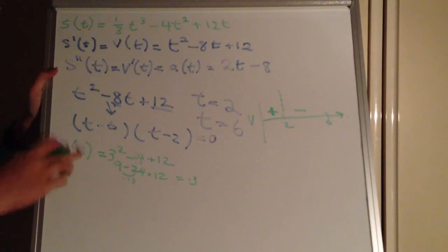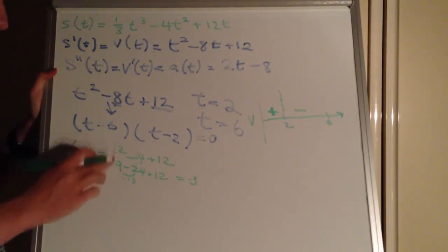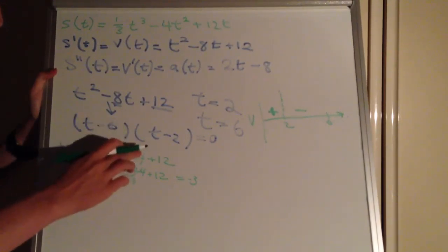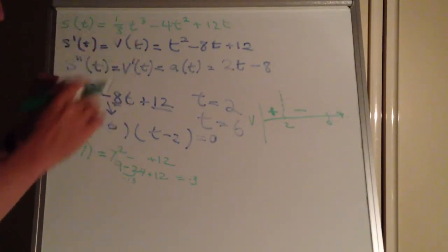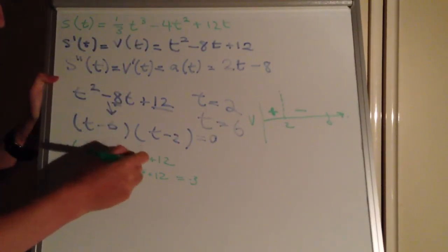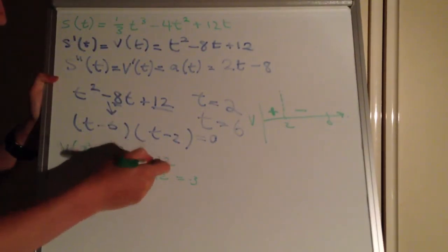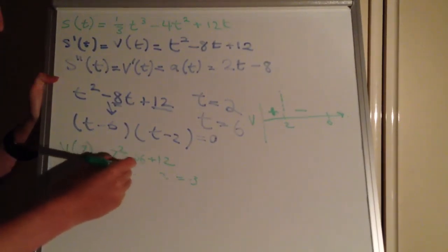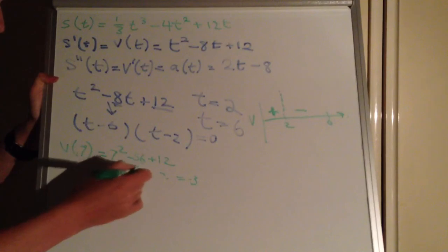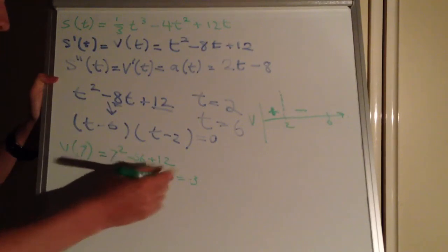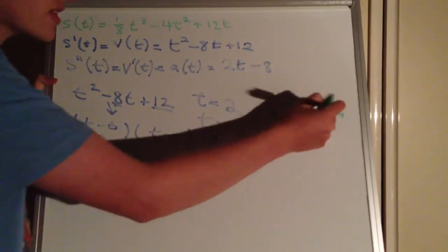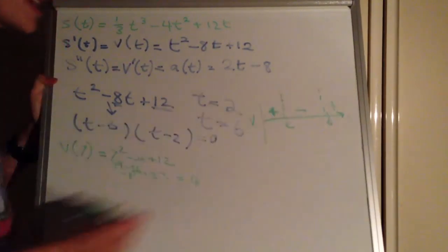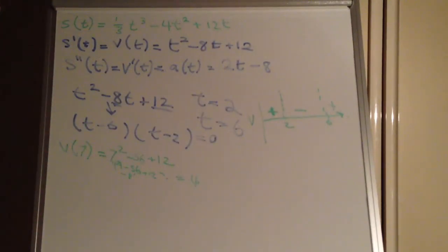Now we take v(7) — beyond t equals 6. We get 7 squared which is 49, minus 8 lots of 7 which is 56, plus 12. So 49 take 56 gives negative 8, plus 12 makes positive 4. We can see it's changed direction again, which makes sense. So our sign diagram goes positive, then negative, then positive again.